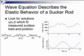The wave equation is a marriage of Isaac Newton's second law of dynamics and Robert Hooke's theory of elasticity. The idea is to look for solutions to the wave equation which match measured boundary conditions — surface load versus time and surface position versus time. When you find those solutions that match these boundary conditions, you evaluate a function — position as a function of depth and time — at the pump depth for various values of time through the stroke, and draw yourself a pump card.